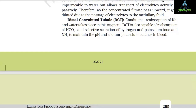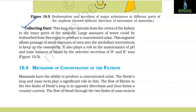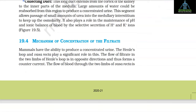DCT is also capable of reabsorption of bicarbonate ions and selective secretion of hydrogen ions, potassium ions, and NH₃ to maintain the pH and sodium-potassium balance in blood. The collecting duct extends from the cortex of the kidney to the inner parts of the medulla. Large amounts of water could be reabsorbed from this region to produce a concentrated urine. This segment allows passage of small amounts of urea into the medullary interstitium to maintain osmolarity, and plays a role in maintenance of pH and ionic balance of blood by selective secretion of hydrogen and potassium ions.